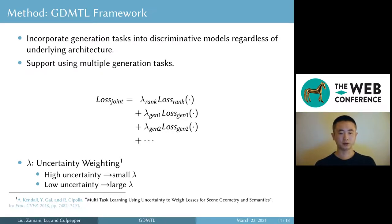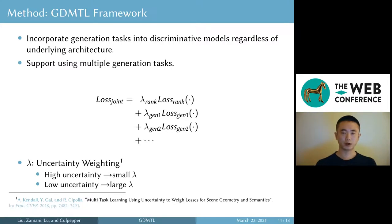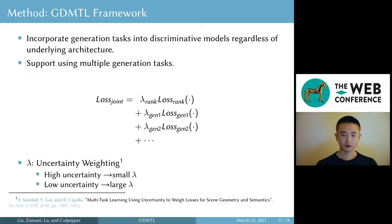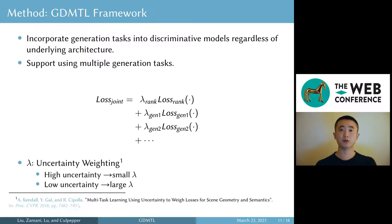Now let's talk about how we train the models. The idea is very simple: we have a main task, which is ranking, so we have a ranking loss. When we add a generation task, we just add the corresponding generation loss into the equation. We can also easily add more generation tasks, like question-answering. So ranking and generation can be optimized jointly in this way, and we hope the knowledge of generation is useful for ranking.